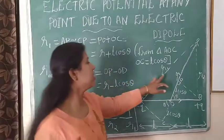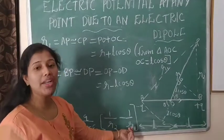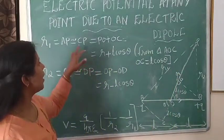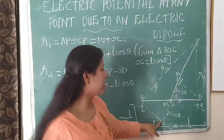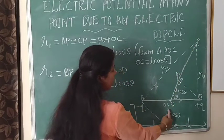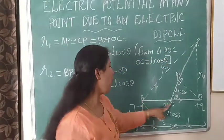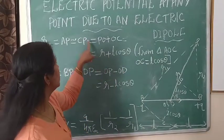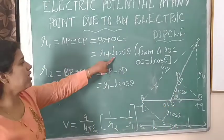We need to calculate R1 and R2. R1 equals AP, and AP is approximately equal to CP. From triangle AOC, we can calculate OC is equal to L cos theta. So CP equals CO plus PO, giving R1 approximately equal to R plus L cos theta.